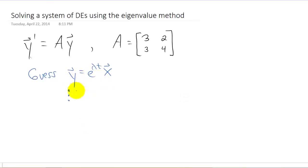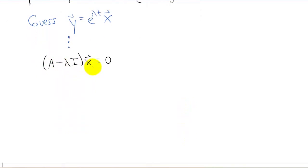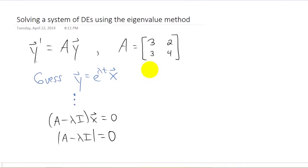We made this guess, we took derivatives, we plugged that derivative and the guess into this system of differential equations, and we ended up getting down to this point. And we discussed how the only way to get non-zero answers to this problem is to require that the determinant of A minus lambda I equals zero. Now it's important to understand where this comes from, but when we're given a problem like this, we can actually start the problem right here.